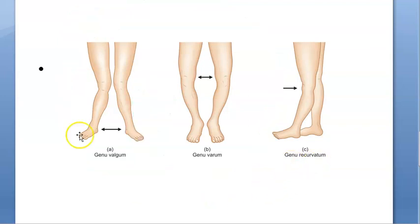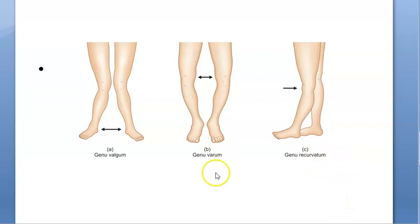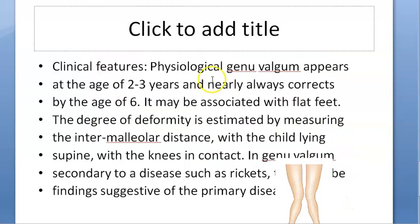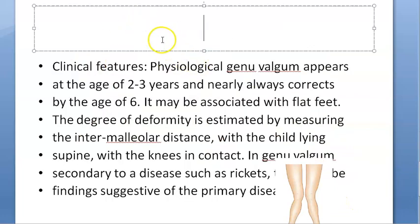There is one more terminology: genu recurvatum. What is genu recurvatum? This is hyperextension of the knee joint. It can occur because of polio, etc. So now you have understood this terminology.